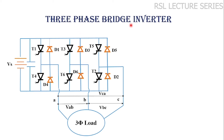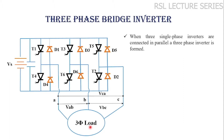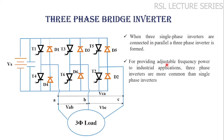In this lecture we are going to discuss about three phase bridge inverter. It consists of six thyristors T1, T2, T3, T4, T5 and T6, and six diodes connected anti-parallely with the thyristors. Vs is the DC supply voltage. Across the supply a capacitor is connected and this is the three phase load. This load may be either star connected or delta connected. This three phase inverter can be formed by connecting three single phase inverters in parallel, and for providing adjustable frequency power to industrial applications these three phase inverters are commonly used. The DC supply can be given by a battery or a rectifier.